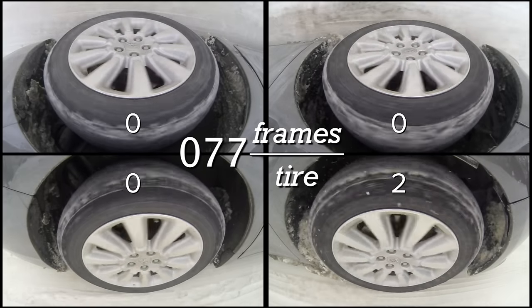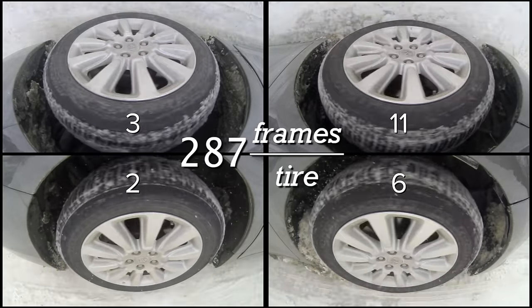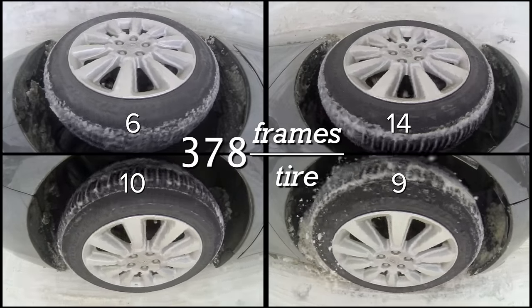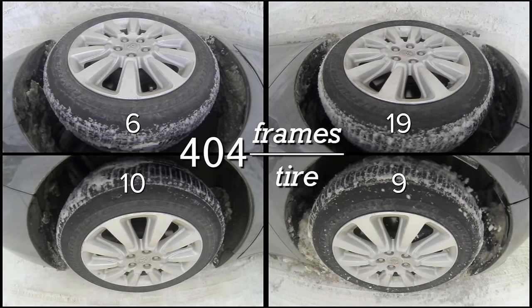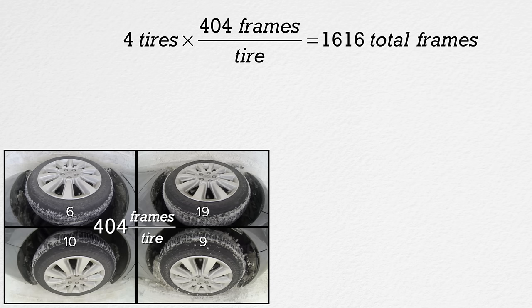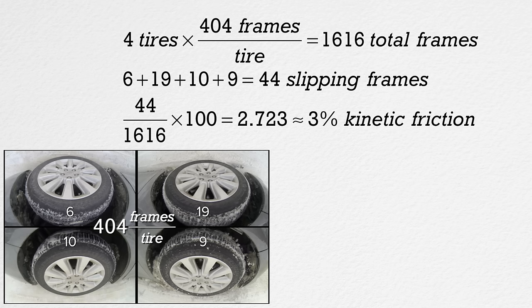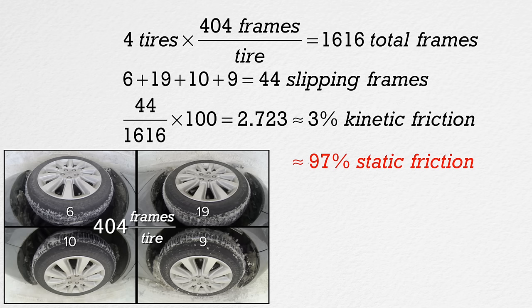Let's watch that again and this time I have added the total frame count. The number of frames per tire is 404, and with 4 tires that means the total number of frames was 4 times 404, or 1616 total frames. The total number of frames where the tires were rolling with slipping was 44. Therefore, 44 divided by 1616 times 100 is the percentage of the time the tires were rolling with slipping and therefore using kinetic rather than static friction. This experiment showed 2.72%, or roughly 3% kinetic friction, and therefore 97% static friction.